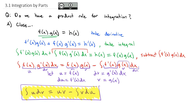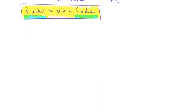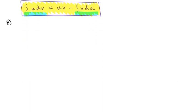The idea here is we're going to have some integral of u dv that we cannot take the antiderivative of. Using this substitution, we'll end up with an integral that hopefully will be simpler that we can take the antiderivative of, which is v du. Let's see what this looks like with some examples — keeping the formula up on top as we do our first example. Let's find the integral of x sine of x dx.